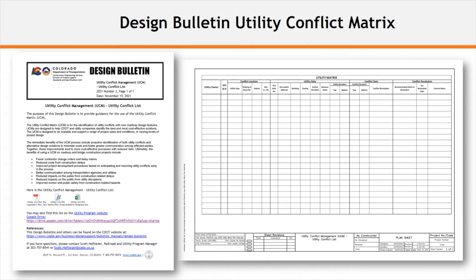The UCM is designed to be scalable and support a range of project sizes and conditions in varying levels of project design. The immediate benefits of the UCM process include proactive identification of both utility conflicts and alternative design solutions to minimize costs and foster greater communication among affected parties. Together, these improvements lead to more cost-effective processes with reduced risks.